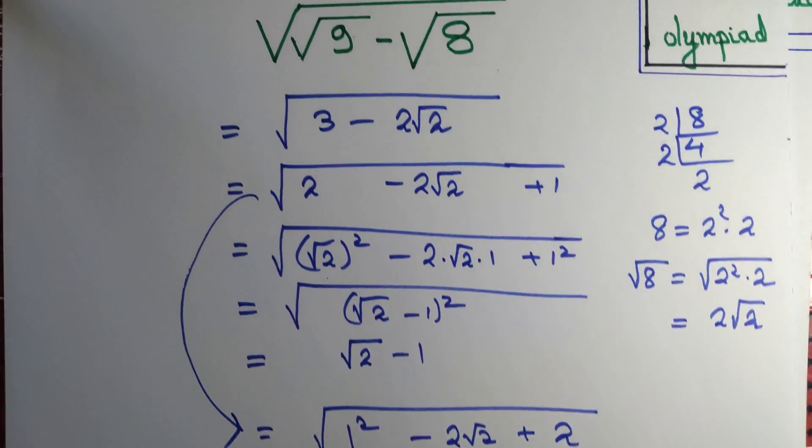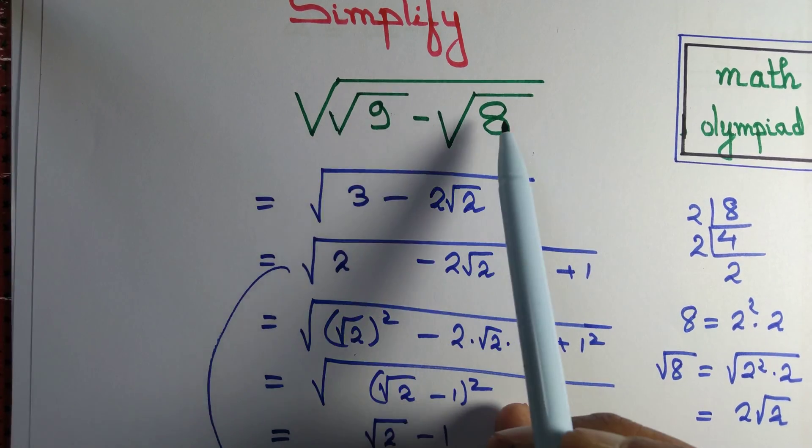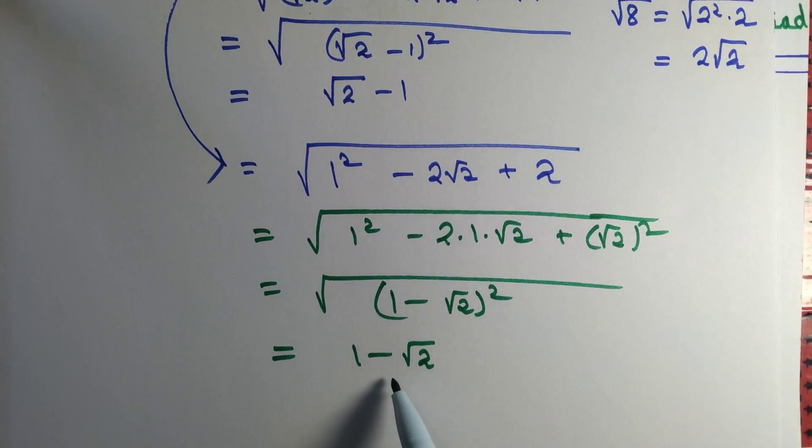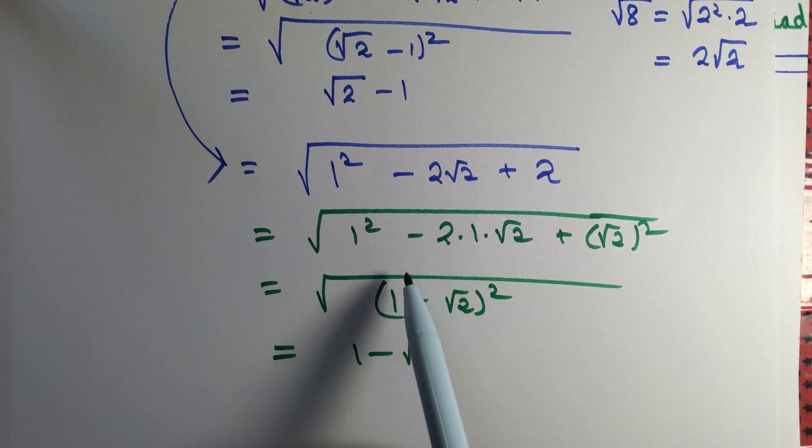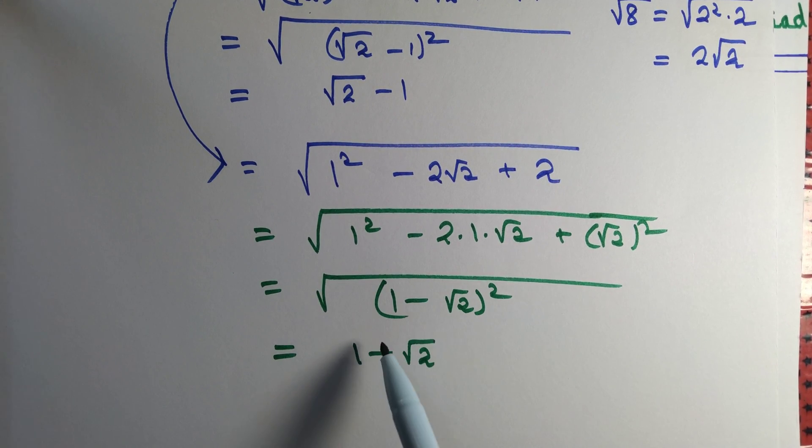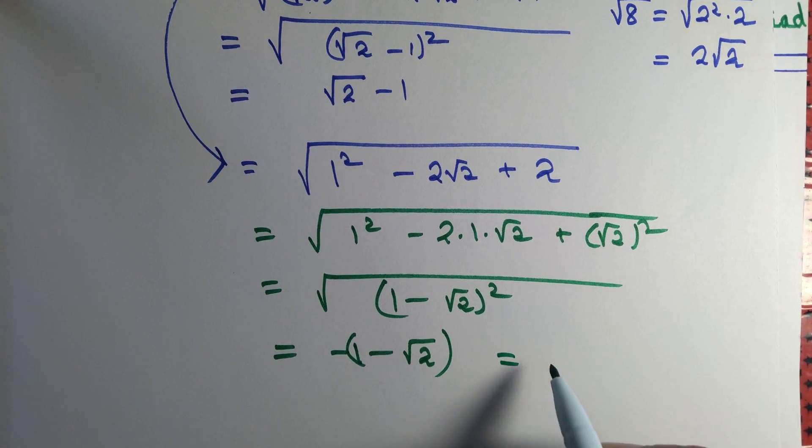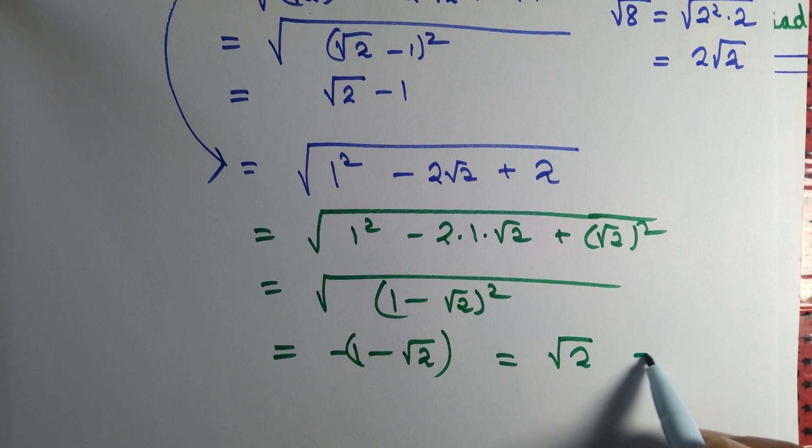Because square root of a number we regard it to be a positive quantity. And 1 minus root 2 is not a positive quantity. So it is correct up to this point. But here we have to take minus of this and so that is equal to root 2 minus 1.